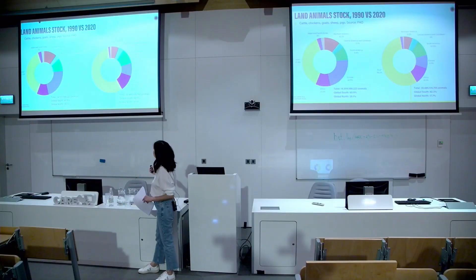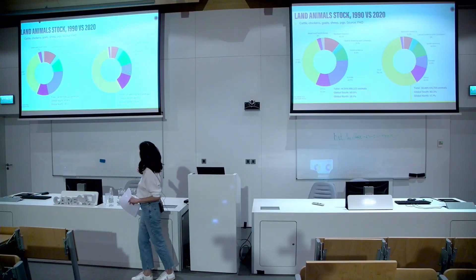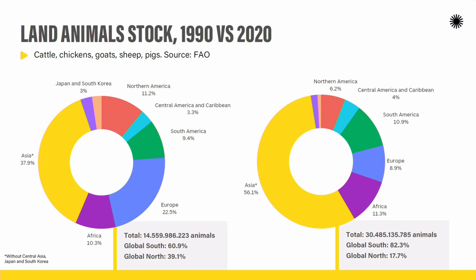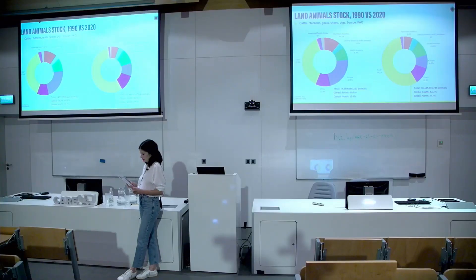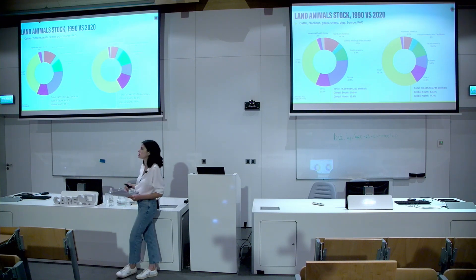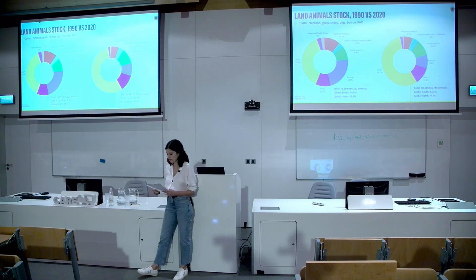Whereas in Europe and Oceania, the net number of animals actually decreased — you have currently fewer animals in Europe and Oceania than you had in 1990. In North America it did increase, but by just around 250,000 animals more in 2020, so it's not very significant growth.